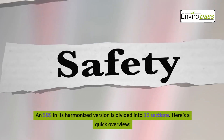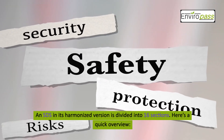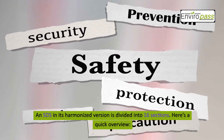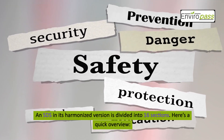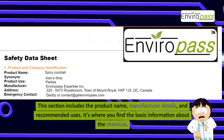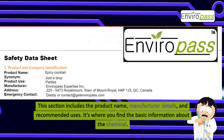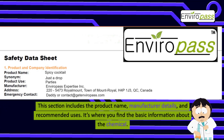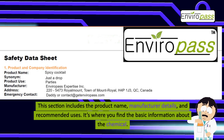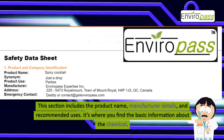An SDS in its harmonized version is divided into 16 sections. Here's a quick overview. Section 1 includes the product name, manufacturer details, and recommended uses — it's where you find the basic information about the chemical.